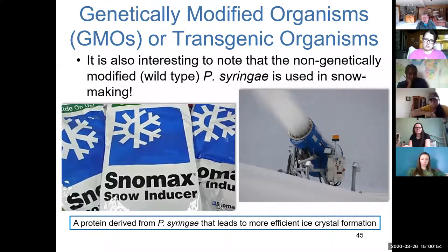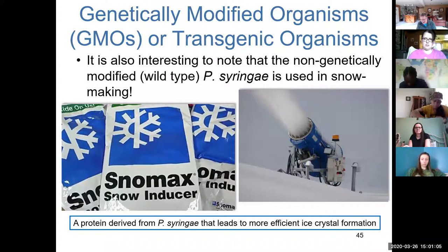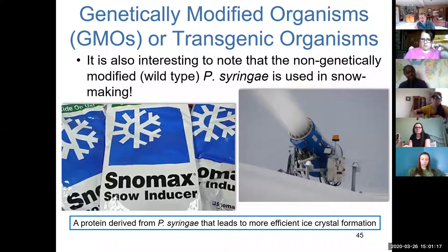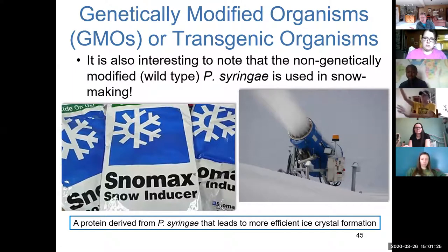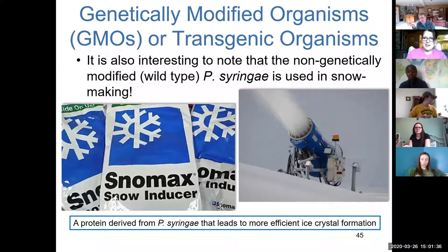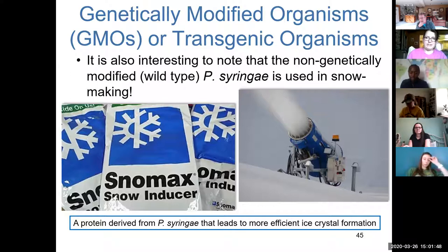Ironically, we do use the wild-type form of Pseudomonas syringae — not the modified form that reduces ice crystal formation, but the form that promotes ice crystal formation — in snow guns at ski resorts. They literally add it to snow guns, allowing them to make snow at higher temperatures. Instead of needing 32°F or lower, they can make snow at 40 degrees, so ski resorts can get their base laid before it's cold enough to rely on mother nature. It all boils down to money.